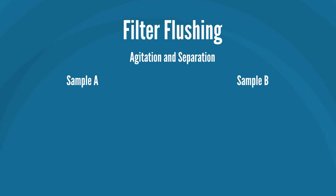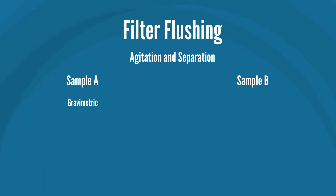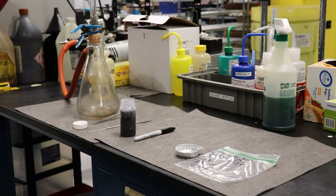Sample A then undergoes gravimetric testing to separate the debris from the solvent to prepare for testing by acid digestion. Sample B is prepared to create a micropatch by filtering the solution through the laboratory filtration system to collect the debris.